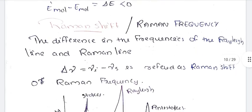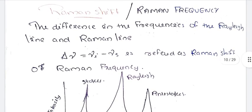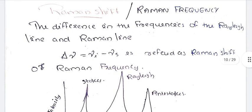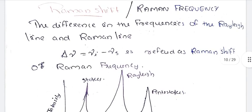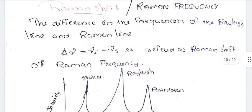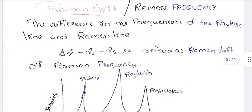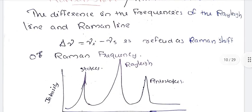What is meant by Raman shift? The difference between the frequency of the Rayleigh line and the Raman line is referred to as the Raman shift. Delta ν equals νi minus νs.